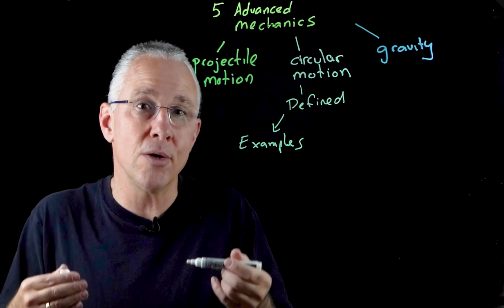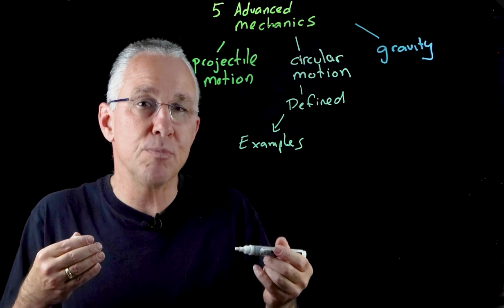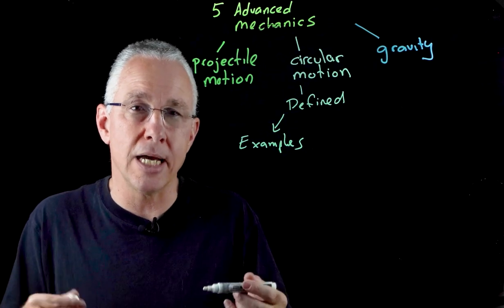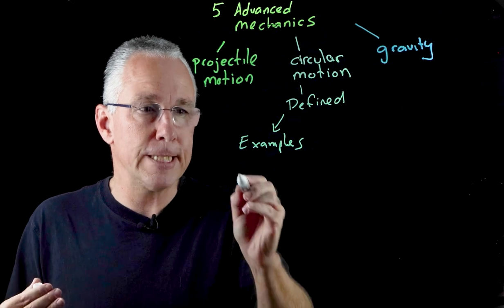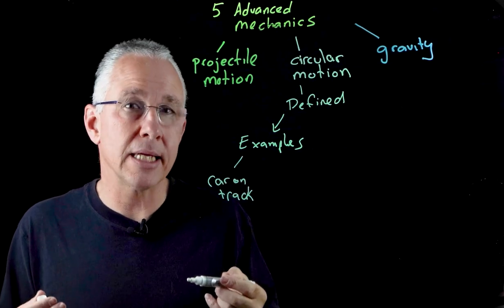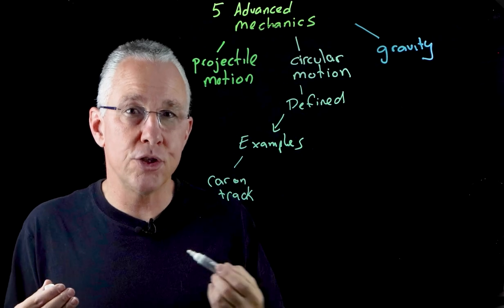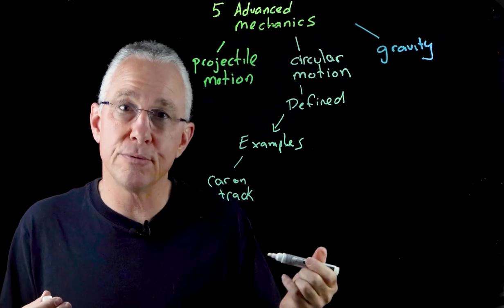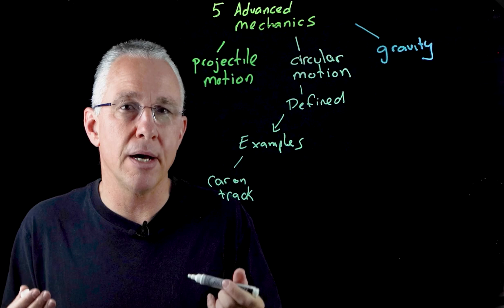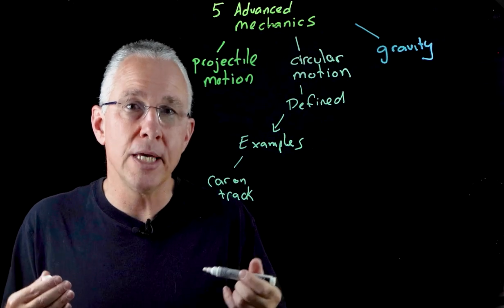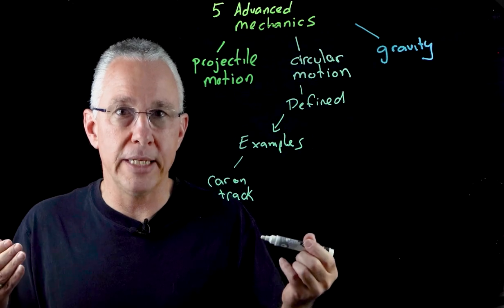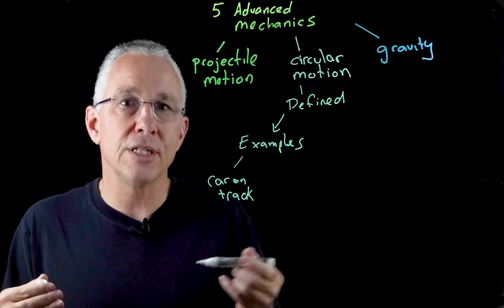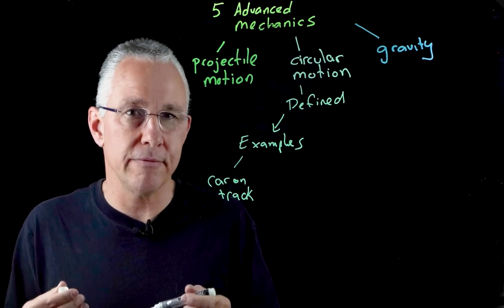Now the syllabus does refer to three specific examples that you need to analyze and they actually have some extra complexity to them. The first is the car on the track, and what that means is a car undergoing a circular path on a track will experience a force inwards which is provided by the friction on the road. And so you need to analyze circular motion in terms of the inclusion of the friction acting in towards the center of that path.